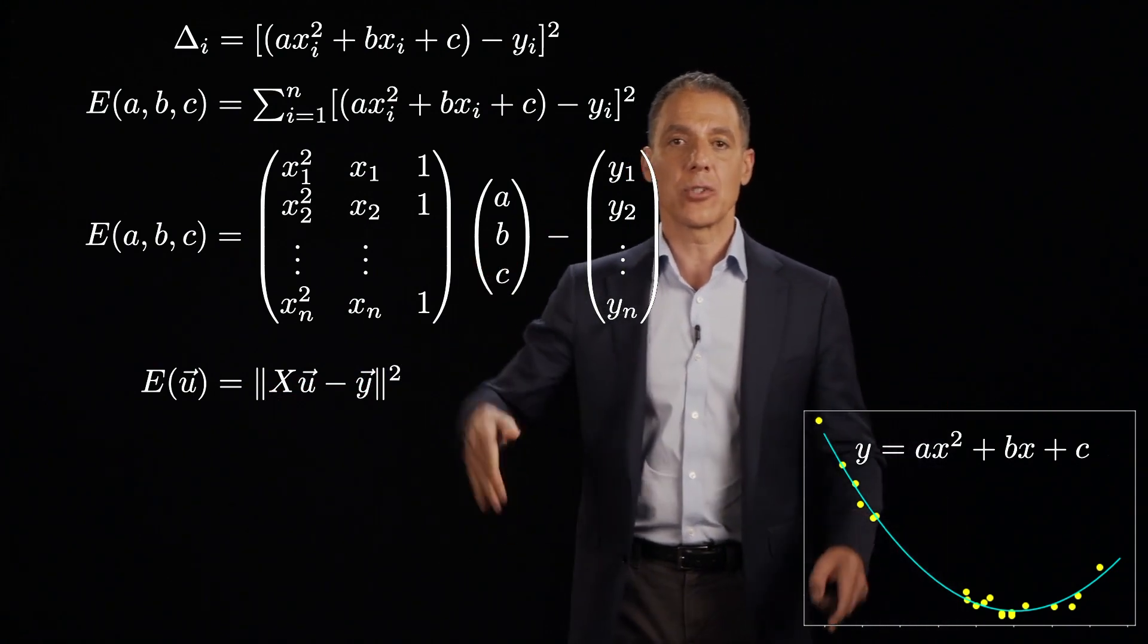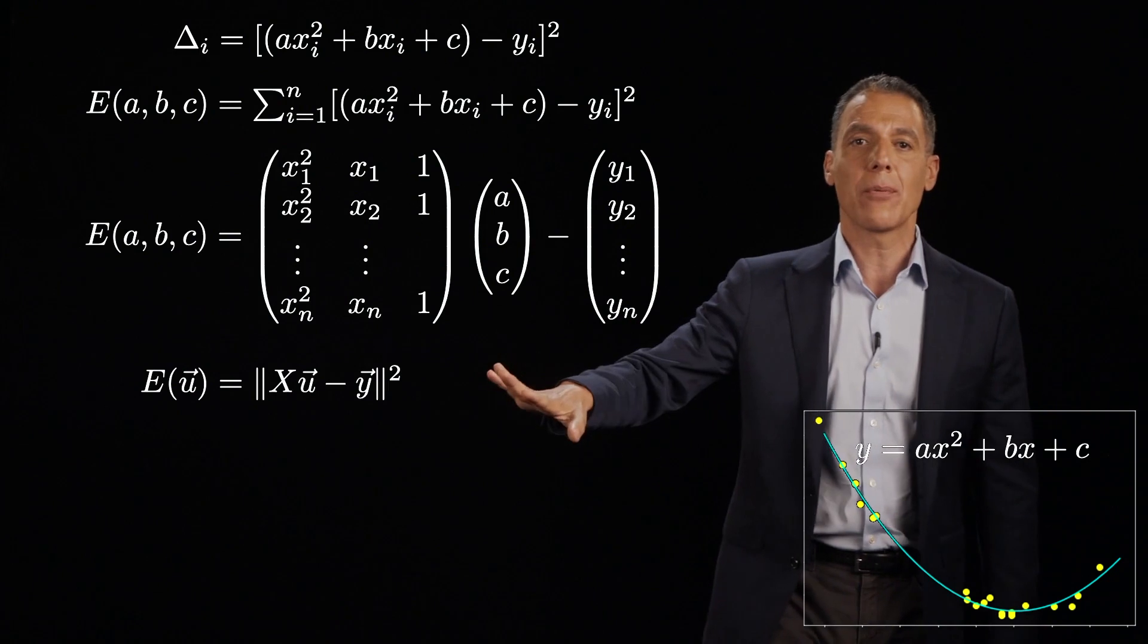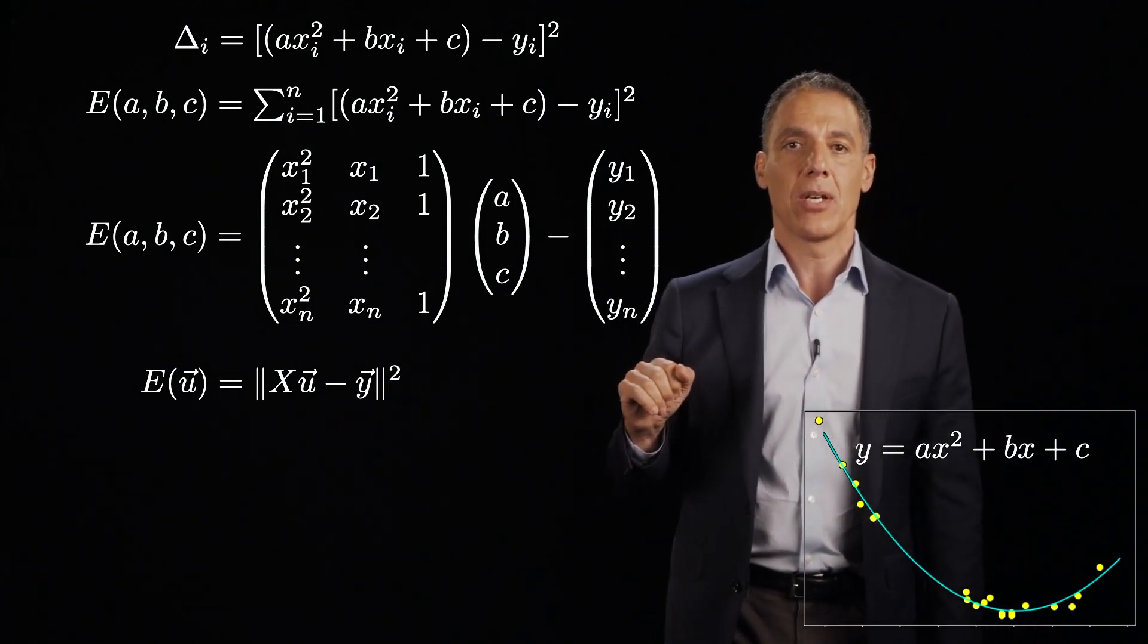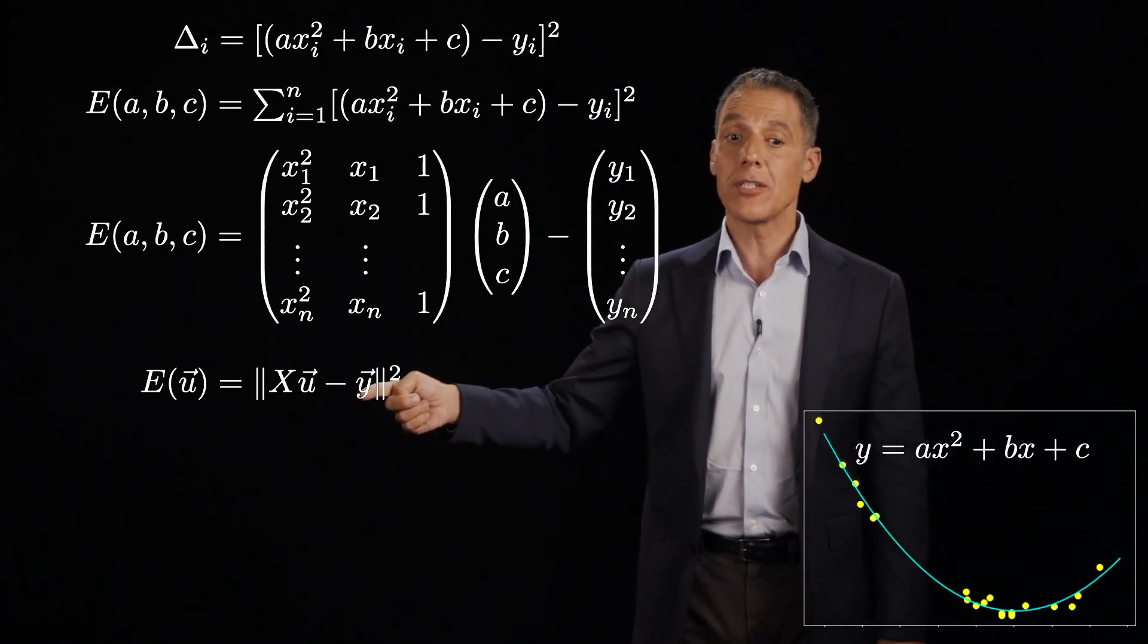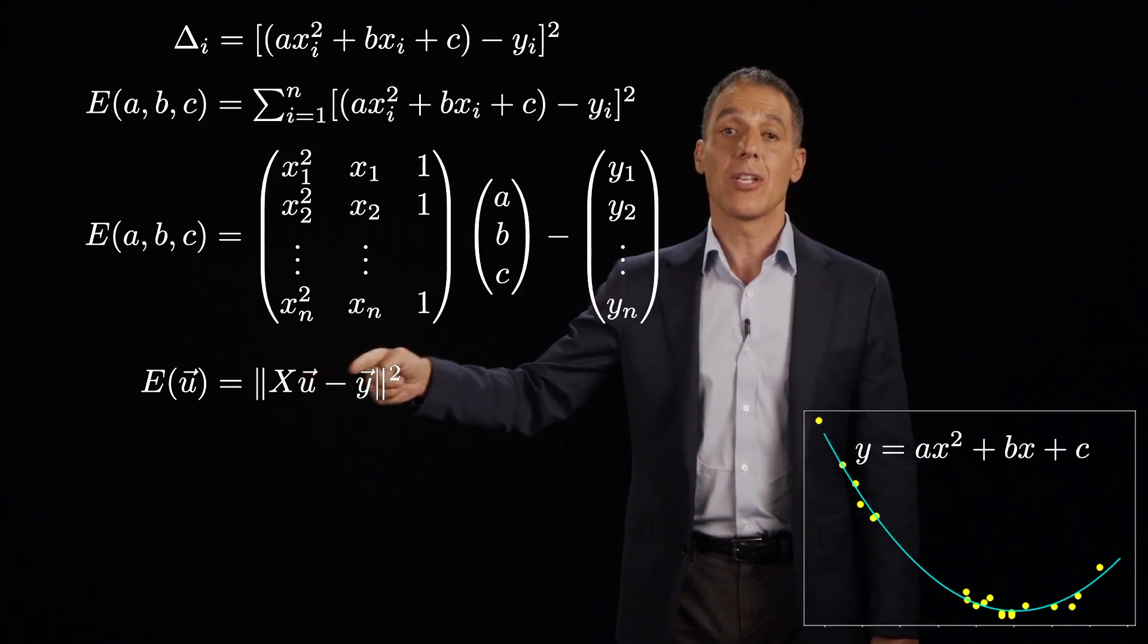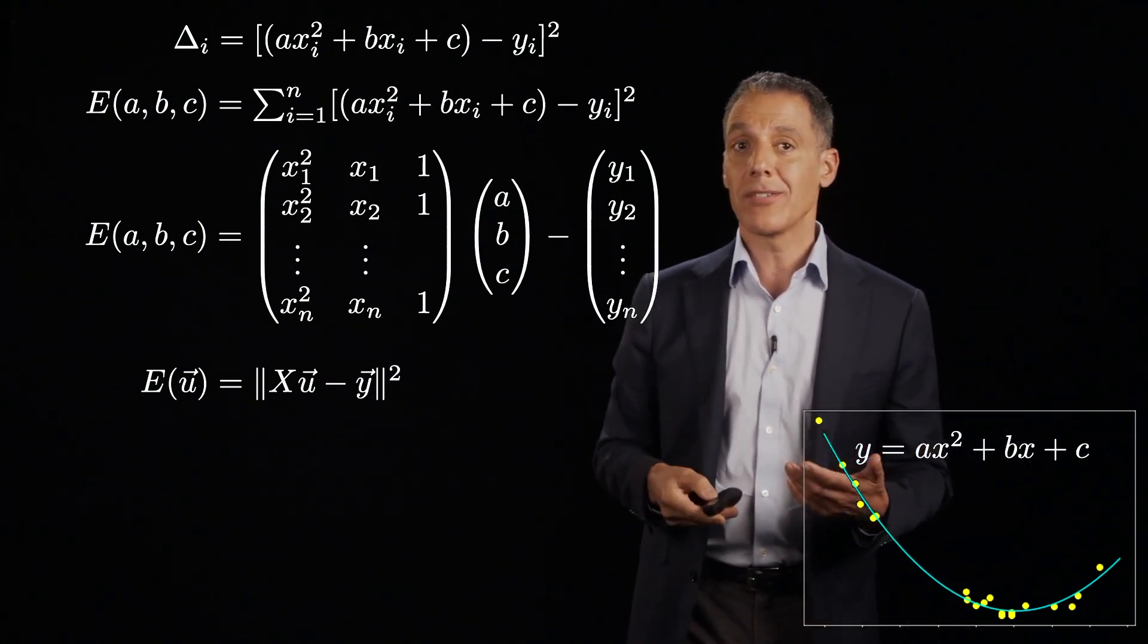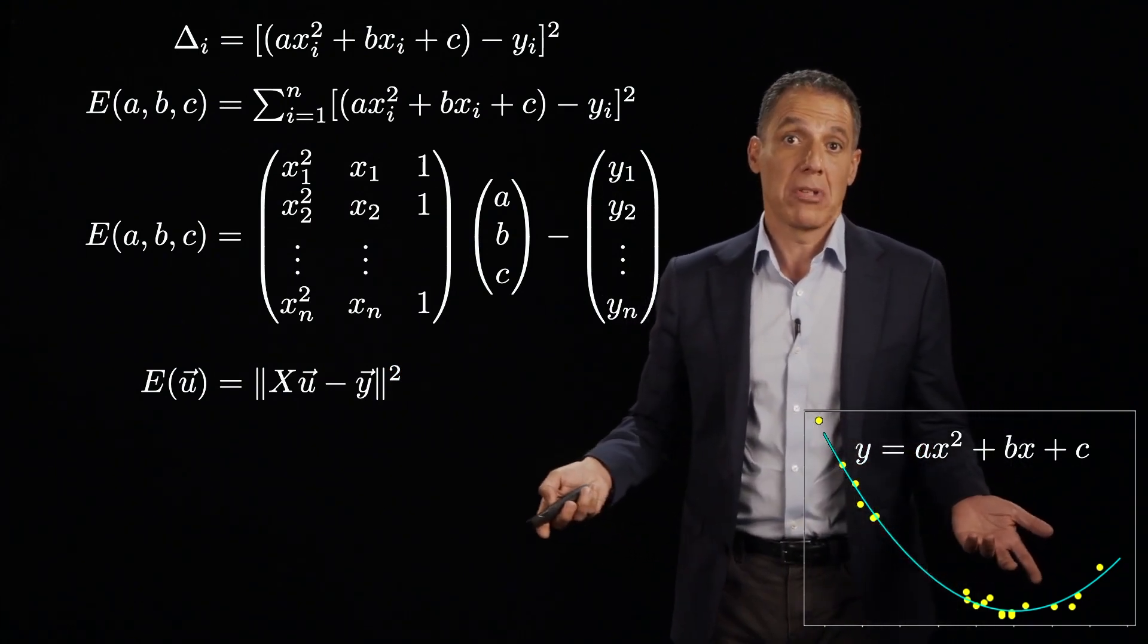So what is this going to be? This is an N by 3 matrix times a 3 by 1 vector. What is that going to be? N by 1 minus N by 1. What is that vector that is the result of this? It's all of the individual deltas, exactly what I have here. And now what I'm going to do is take the transpose, multiply it by itself. That's the same as the vector norm squared. And now I'm going to have my quadratic error function in the same form.